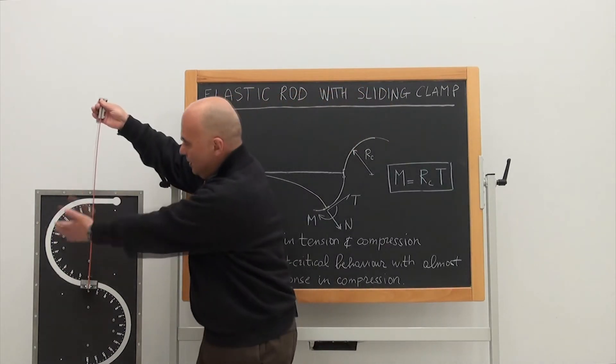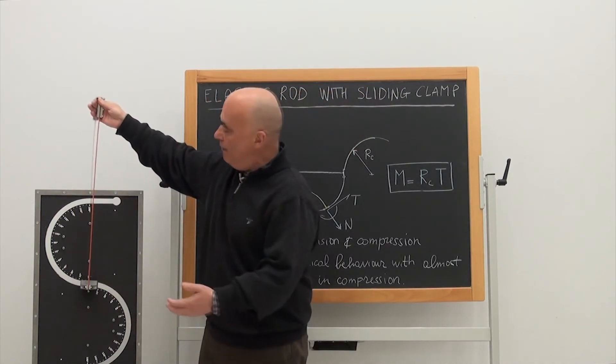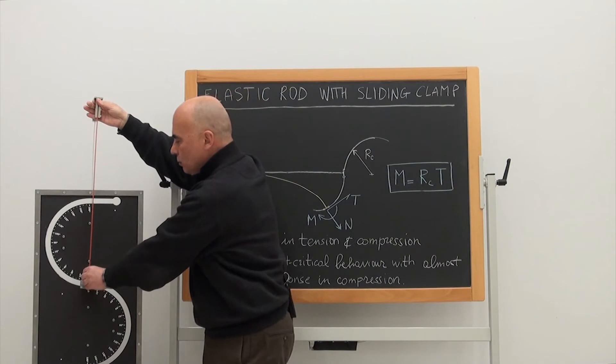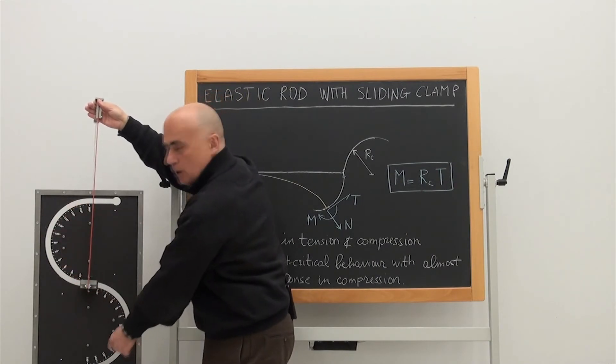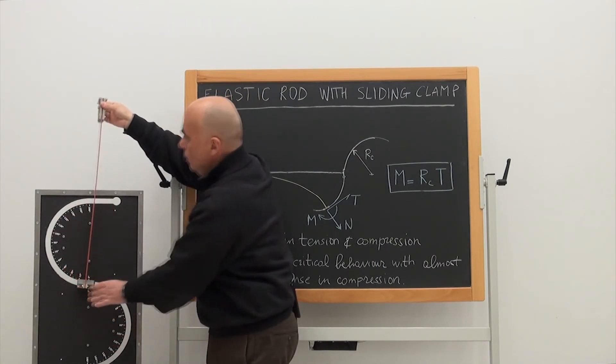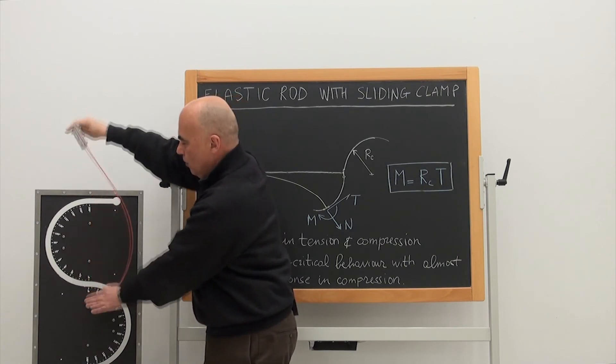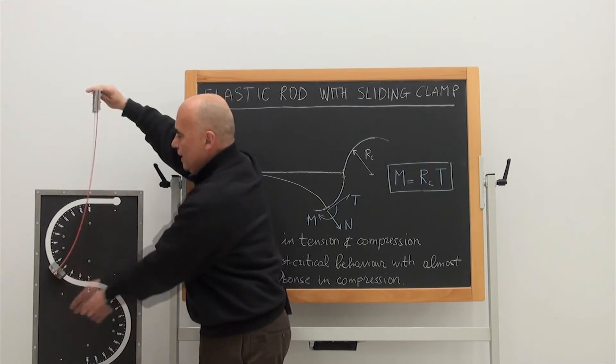And you may see the device here that we have used to realize the elastic rod, the S-shaped profile, and the movable clamp. So, this system can be subject to compression or can be subject to tension.